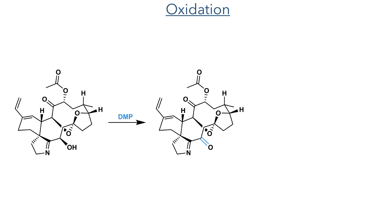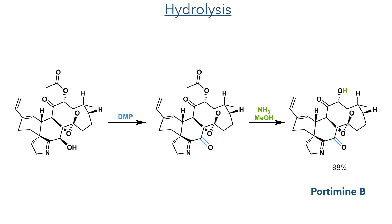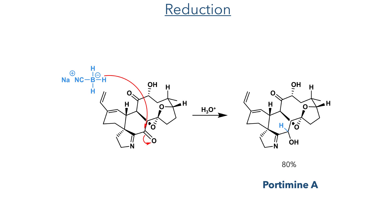From here, the simple oxidation of the hydroxyl group with DMP to form a ketone, followed by hydrolysis of the acetate group using ammonium and methanol, produced portamine B in an 88% yield. To generate portamine A, a simple reduction with sodium cyanoborohydride reduced this ketone in an 80% yield, completing the synthesis of portamine A.